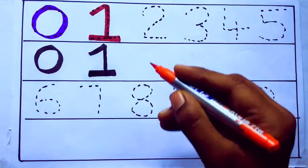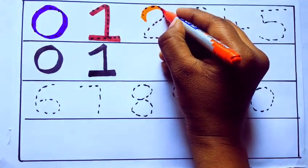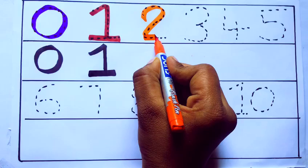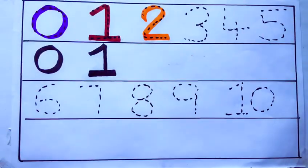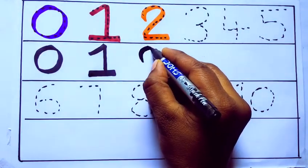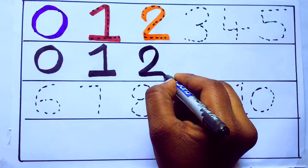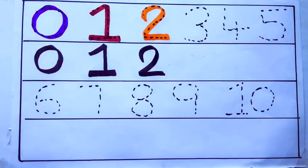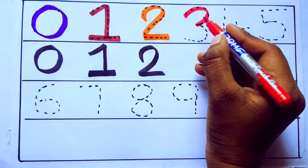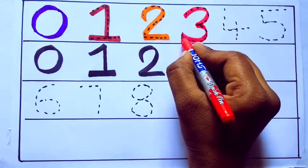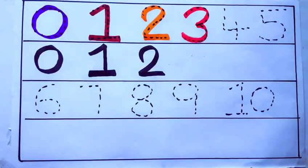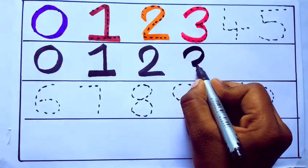Orange color, two, T-W-O, two. Number two. Red color, three, T-H-R-E-E, three. Number three.